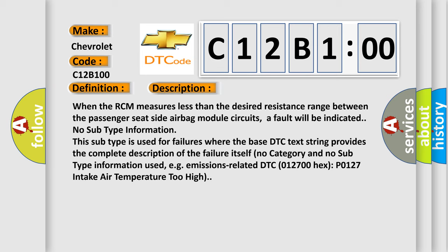This subtype is used for failures where the base DTC text string provides the complete description of the failure itself. No category and no subtype information used, e.g. emissions-related DTC 012700 hex P0127 intake air temperature too high.